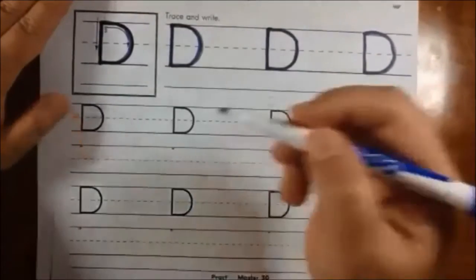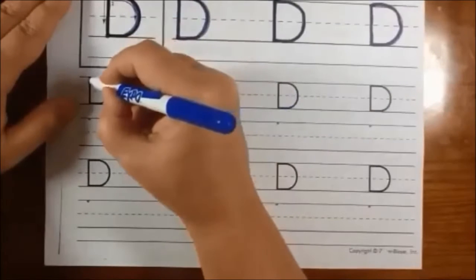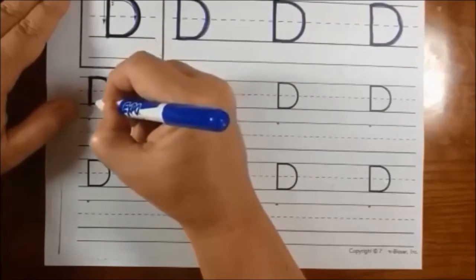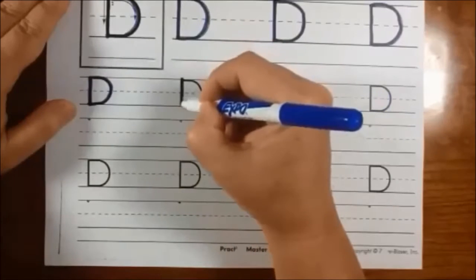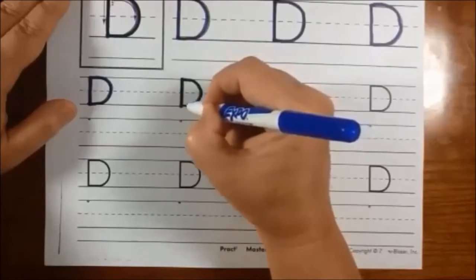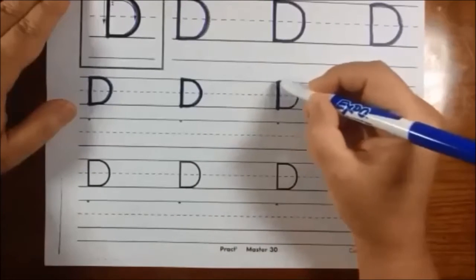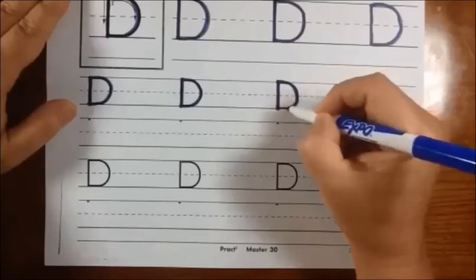We're going to try some without tracing. Okay, let's try the smaller ones. Down, up, and around. Down, up, and around. Down, to the top, and around.